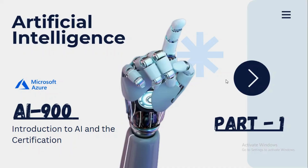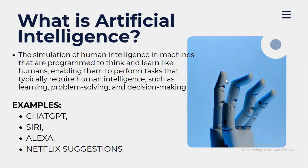Let's begin by understanding what exactly artificial intelligence is. The definition is: the simulation of human intelligence in machines that are programmed to think and learn like humans, enabling them to perform tasks that typically require human intelligence, such as learning, problem solving, and decision making. Simply put, if a machine can do work like a human — learning, problem solving, and taking decisions — then we call that machine artificial intelligence.